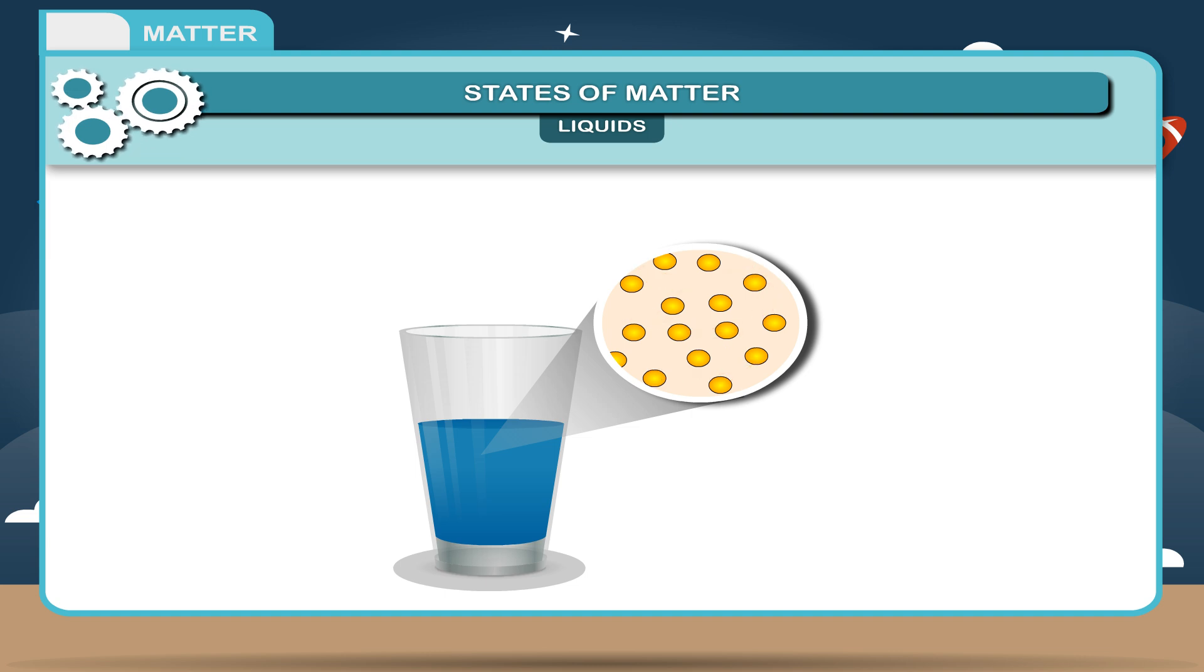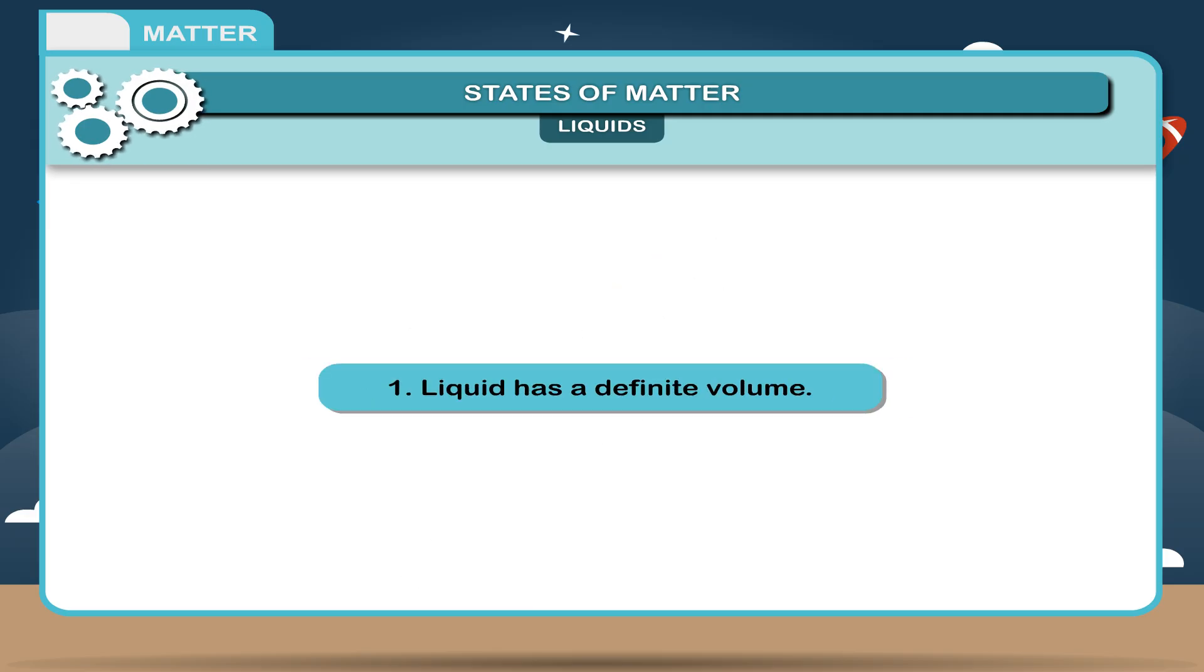Liquids can be characterized by the given properties. 1. Liquid has a definite volume.